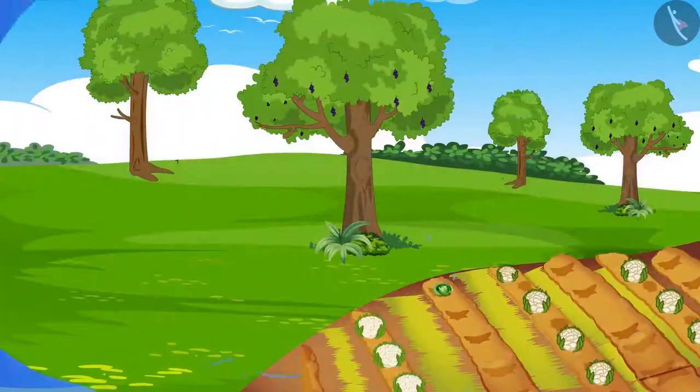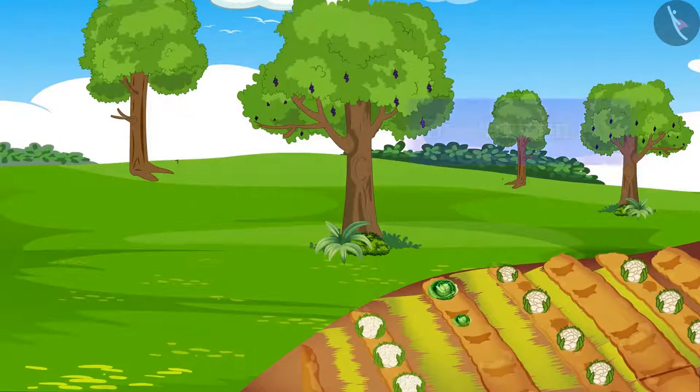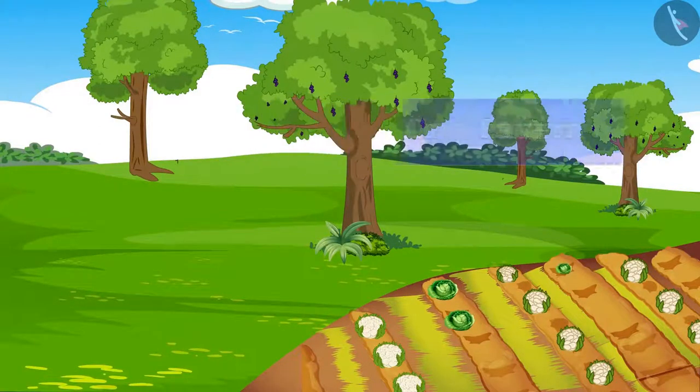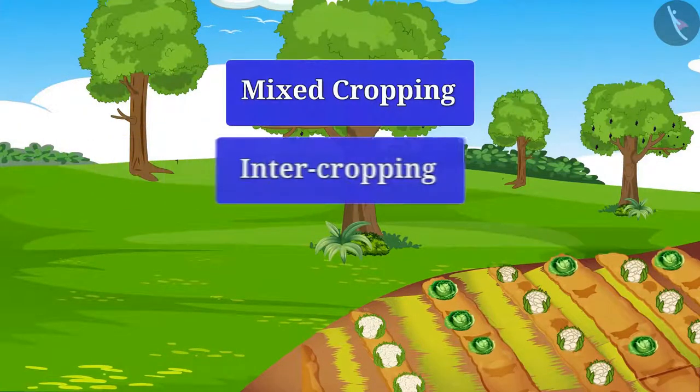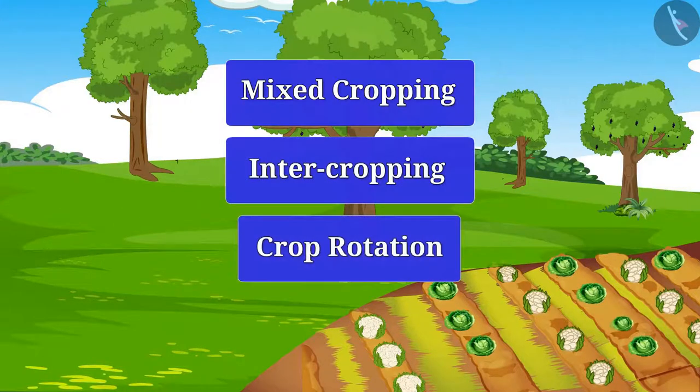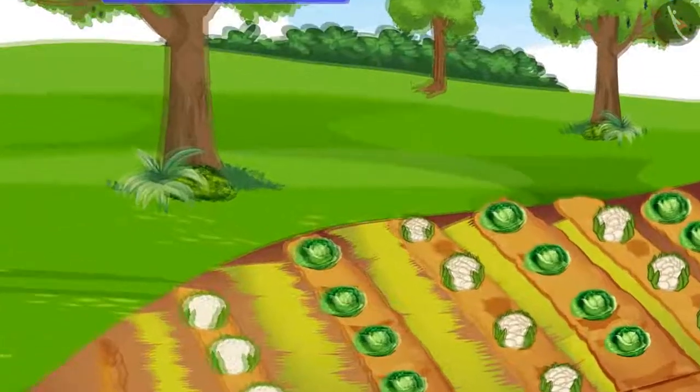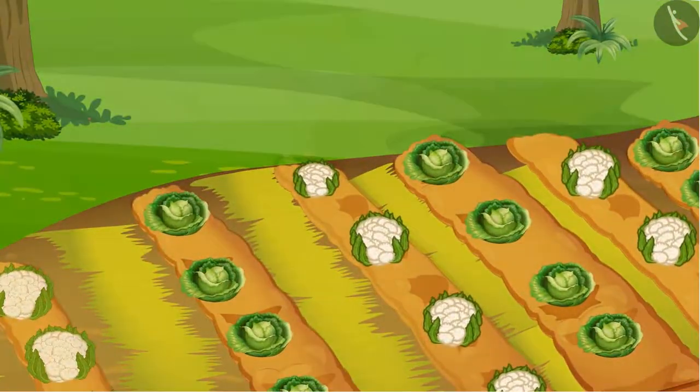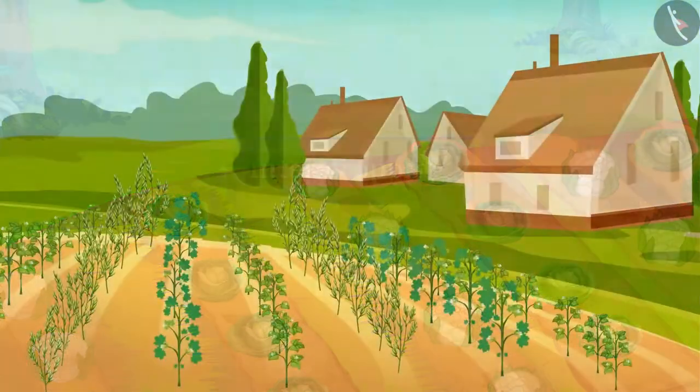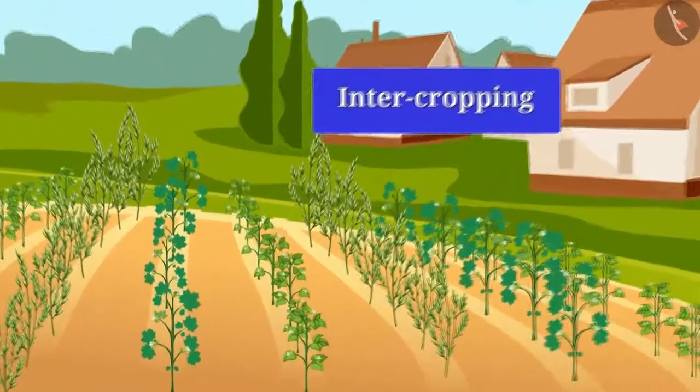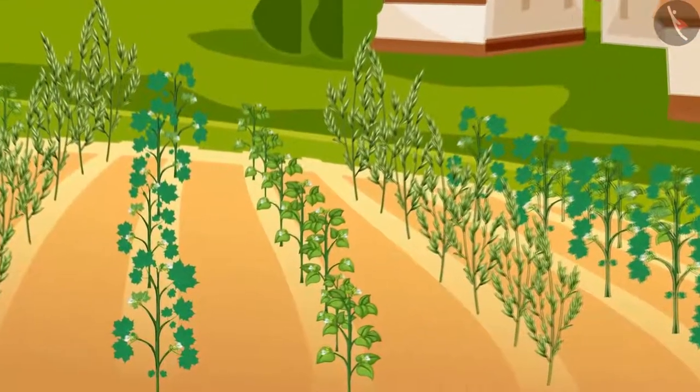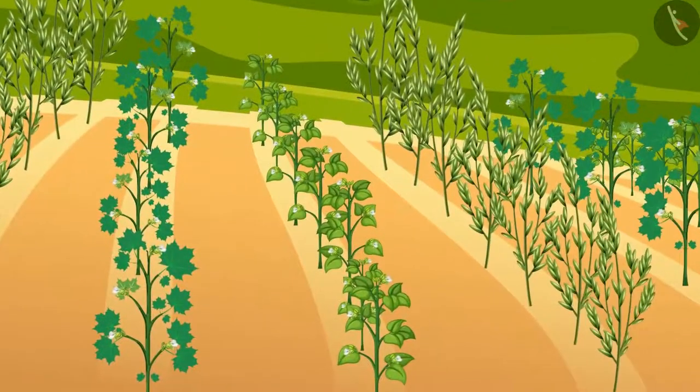Let's know how crop production can be increased by using different crop patterns, for example: mixed cropping, inter-cropping, and crop rotation. Let us know about these methods in detail. Mixed cropping: in this method different types of plants are grown in the same field. Inter-cropping: in this method two or more crops are grown at the same time in a land in a certain row pattern.